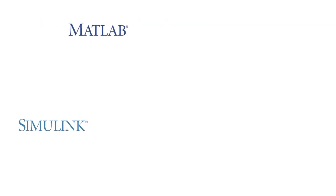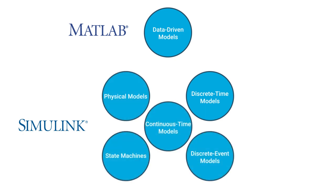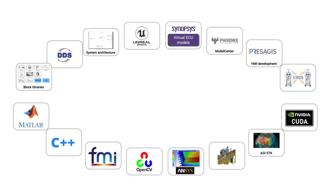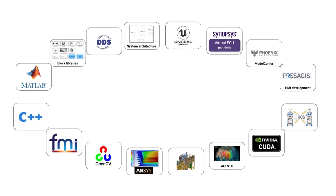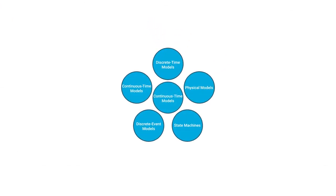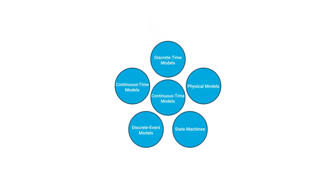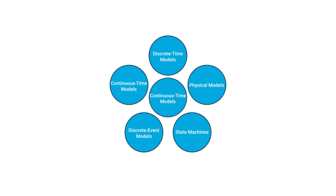With MATLAB and Simulink, you can model and simulate components that run continuously, in discrete time, or are event-driven. There's an entire ecosystem of products and solutions that works with MATLAB and Simulink. After modeling and simulation, you can generate code automatically for your production systems.